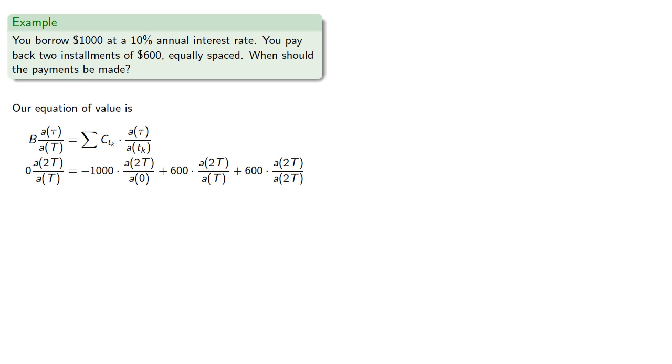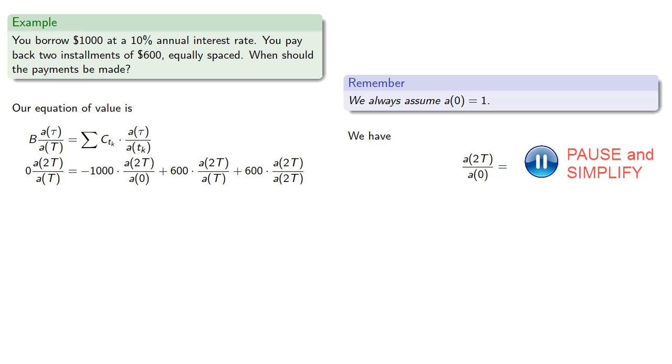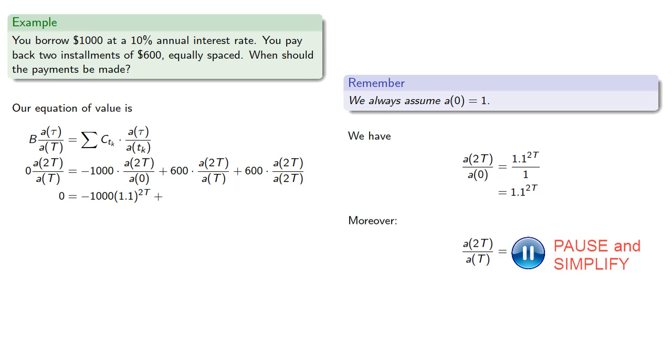Now to simplify this expression, remember we always assume that a(0) is equal to 1. And so this first fraction, a(2t) divided by a(0) becomes. Moreover, the second fraction, a(2t) divided by a(t) becomes. And finally, this last fraction is a number divided by itself, so it's just going to be equal to 1. And so we get our new equation.